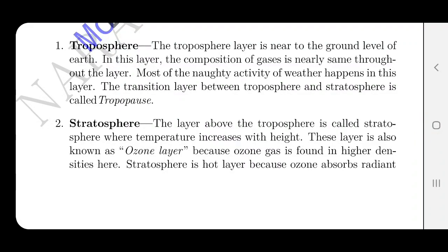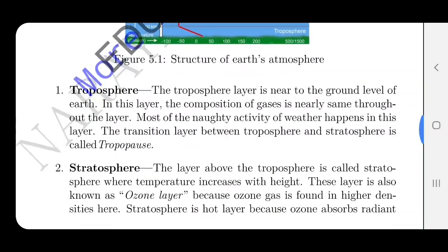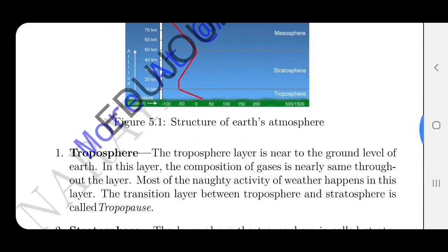The troposphere layer is nearest to the ground level of Earth. In this layer, the composition of gases is nearly the same throughout. Most of the weather activity happens in this layer. The transition layer between the troposphere and stratosphere is called the tropopause.